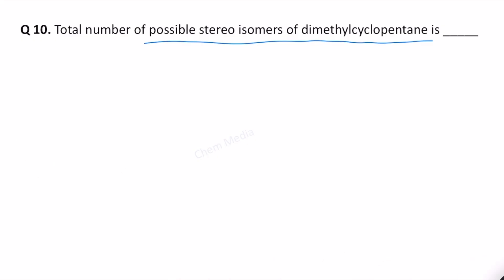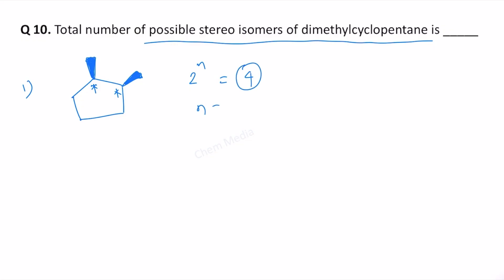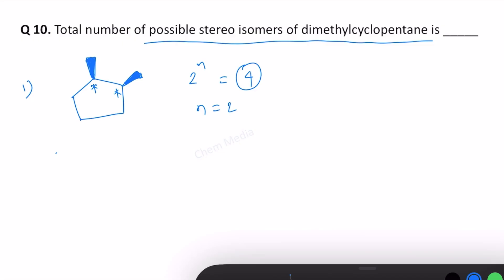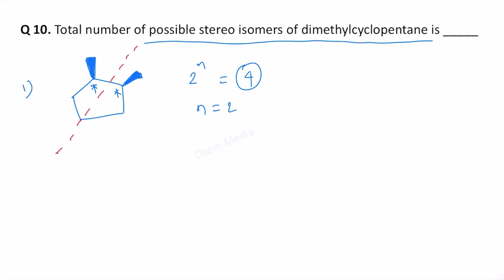So let me remove this. Now we can write 1,2-dimethyl cyclopentane with both the methyl groups up. If we do that then we have two chiral centers. With 2 chiral centers, 2 to the power n gives us 4 expected isomers — but are we going to get 4 isomers? No, because this is a meso compound; the molecule has a plane of symmetry and half of the molecule is a mirror image of the other half. So when we have a meso compound, we won't get the maximum 4 isomers — we will get only 3.